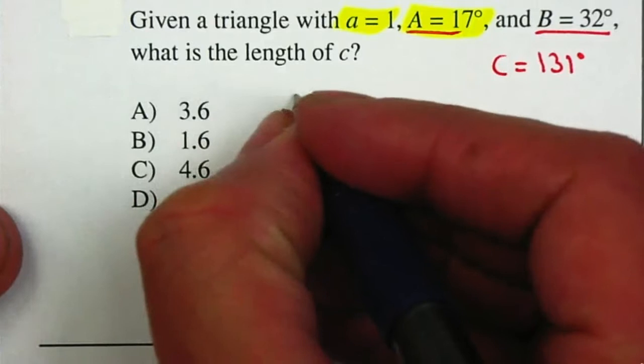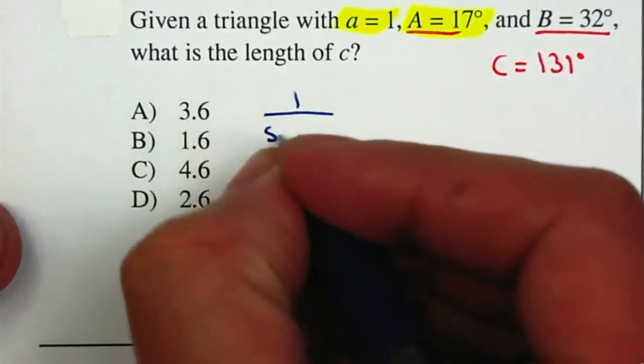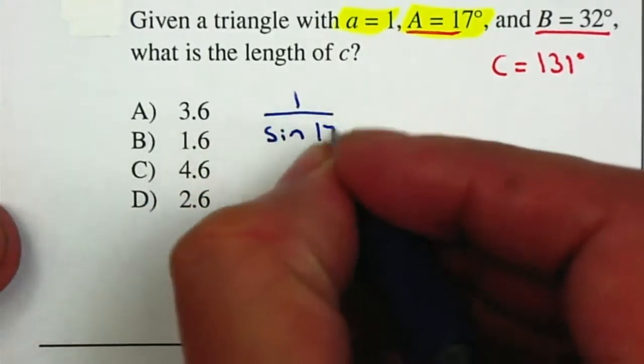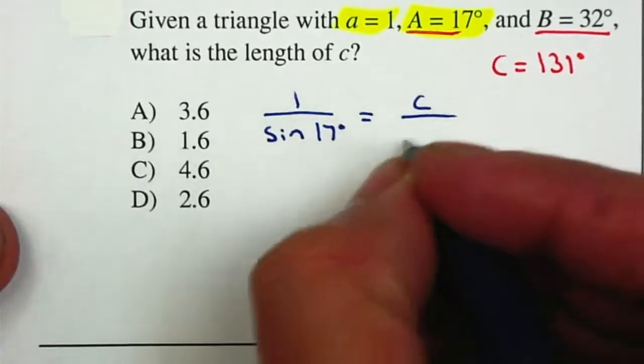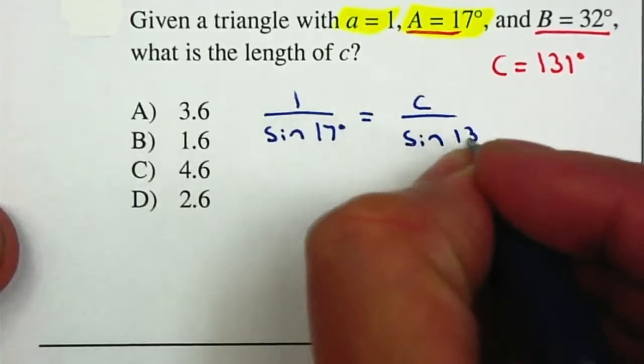So we have a over the sine of A, which is 17 degrees, equal to c, which is what we're looking for, over the sine of C, which is 131 degrees.